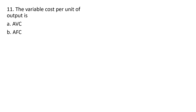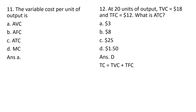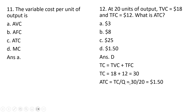Question eleven. The variable cost per unit of output is average variable cost. Answer choice A. Question twelve. At 20 units of output, total variable cost equals $18 and total fixed cost equals $12. What is average total cost? First, total cost equals total variable cost plus total fixed cost, so total cost is $30. Then $30 divided by 20 gives average total cost of $1.50.